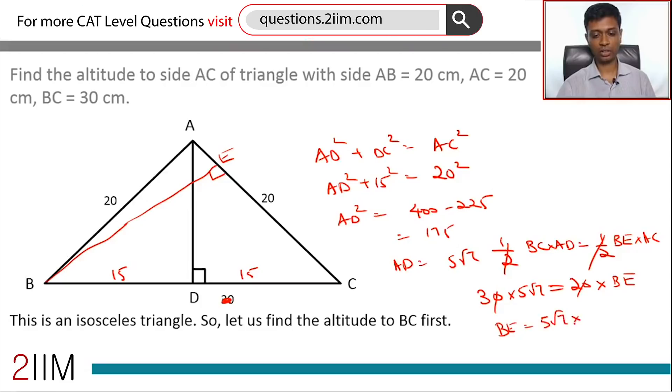Which is 7.5√7. Right, so the altitude to side AC measures 7.5 times √7.